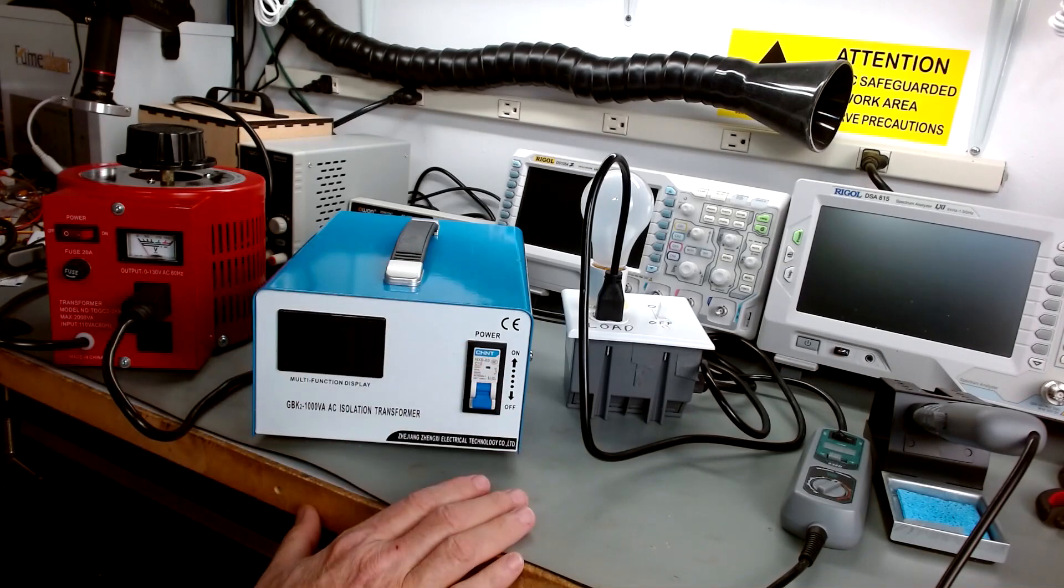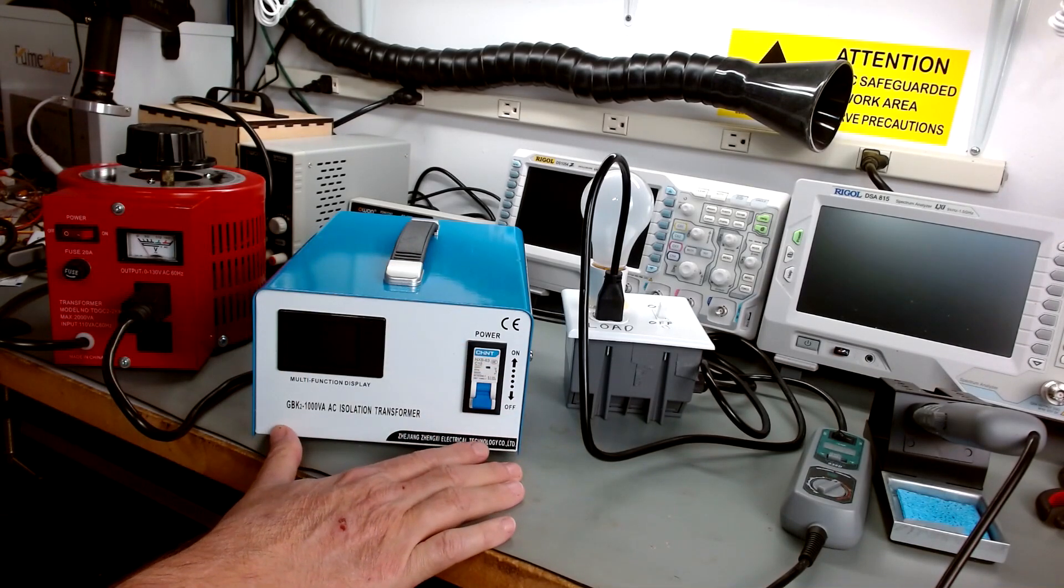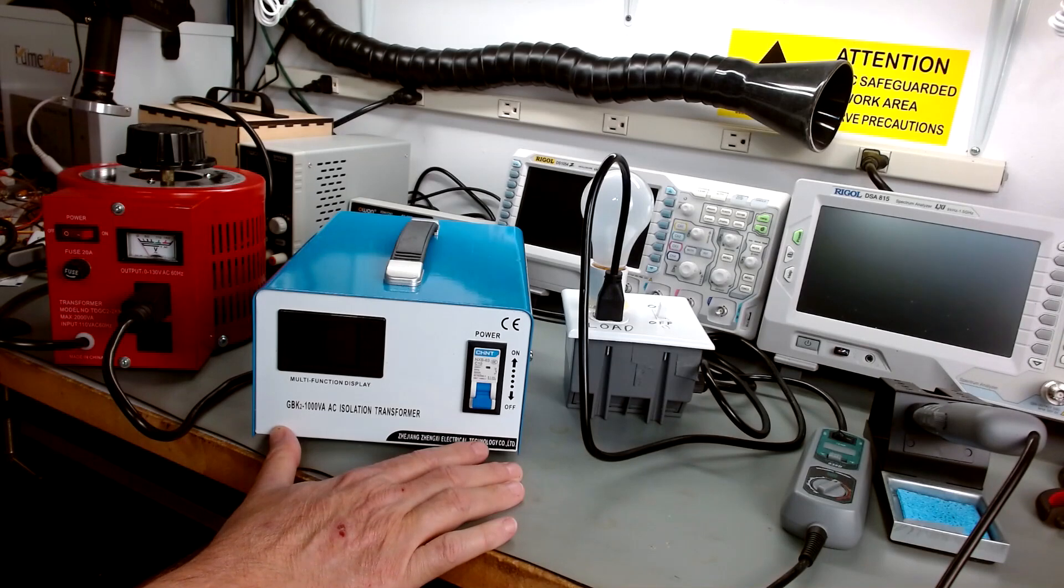No, because ground doesn't pass through. There's no ground to ground fault to. The only thing you get out of here is a hot neutral and they're galvanically isolated. They have no interaction at all with the mains that you're powering your shop with, your lab.